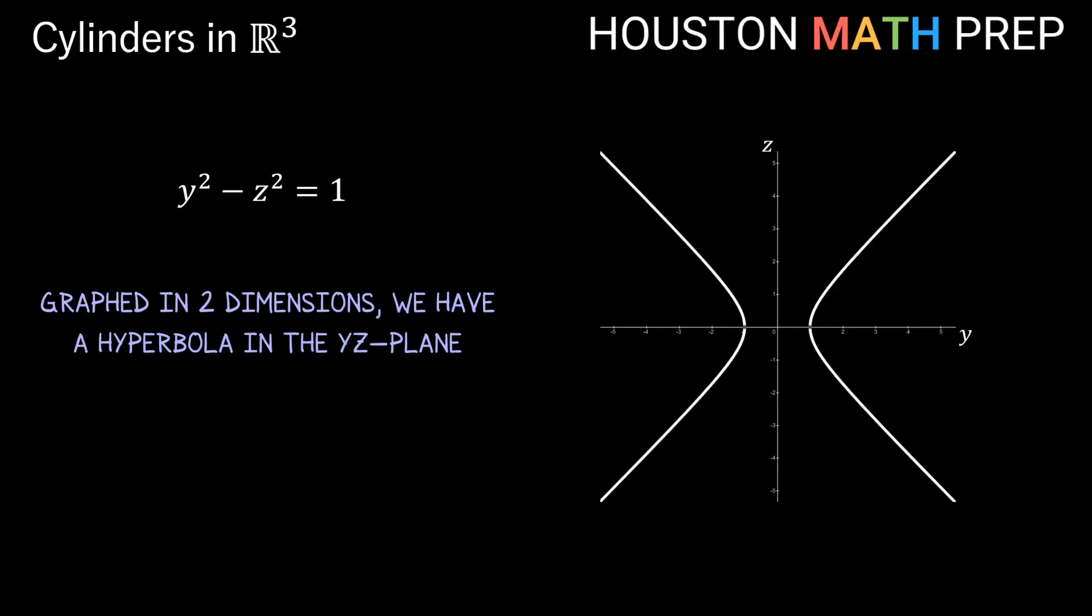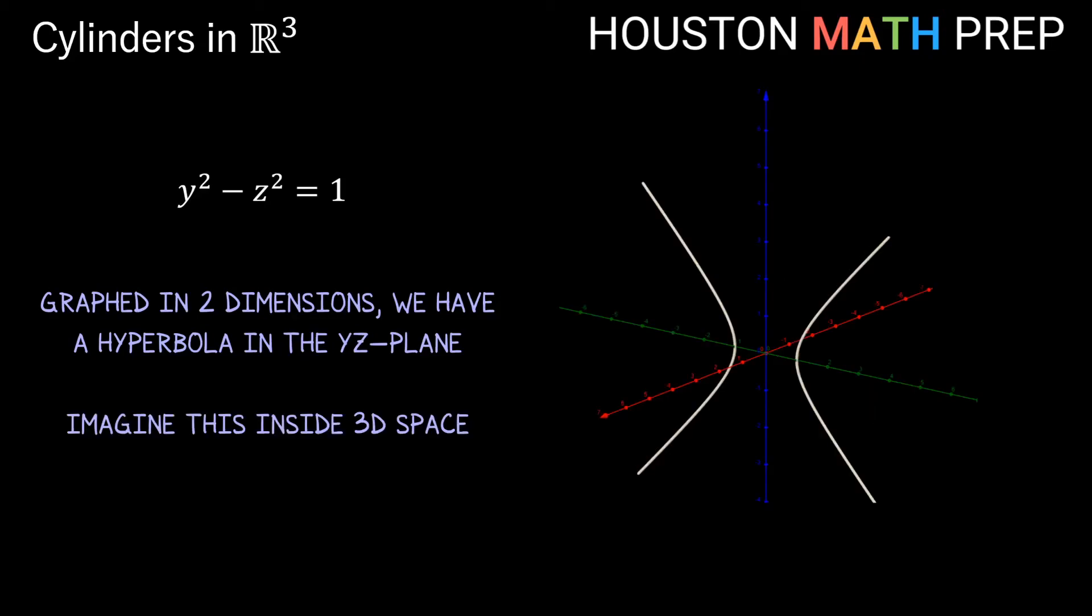So if we think about our hyperbola in this yz plane and now imagine it positioned inside of 3D space in the yz plane, we start to get a similar idea of what the cylinder might look like. If we look at our equation that only involves a relationship between y and z, that tells us there's no condition or restriction placed on x values.